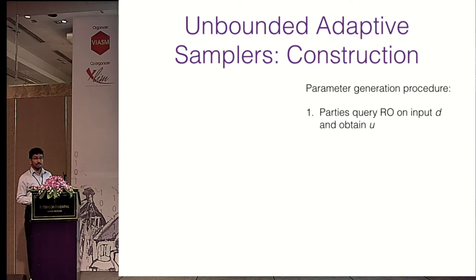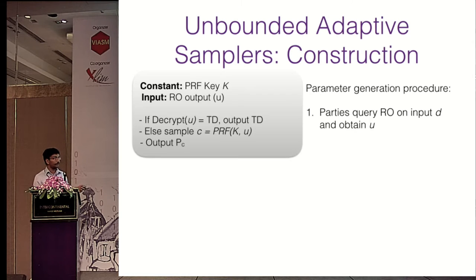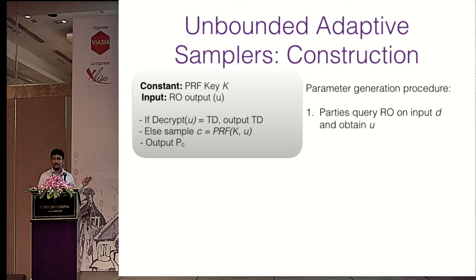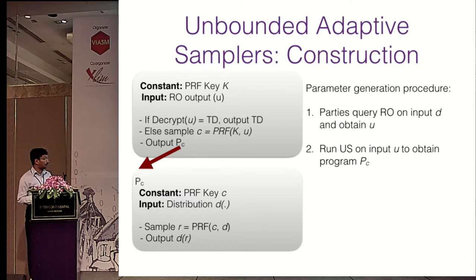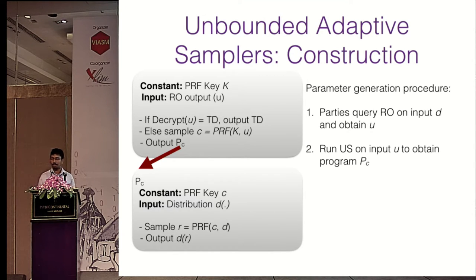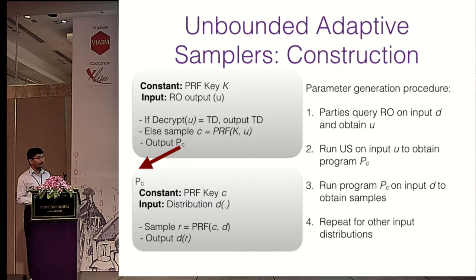This leads to a two-step approach. Parties first query the random oracle on input D and obtain output U, then run the obfuscated program only on this random oracle output U. The program detects whether U contains a hidden trapdoor: if so, it outputs the trapdoor directly; if not, it computes the PRF output and — since no distribution is input — outputs another program PC. PC takes a distribution D, samples a random value using the PRF, and computes D's output on that random value. So we have a two-level hierarchy: the universal sampler outputs an obfuscated program which is then run on the input distribution.